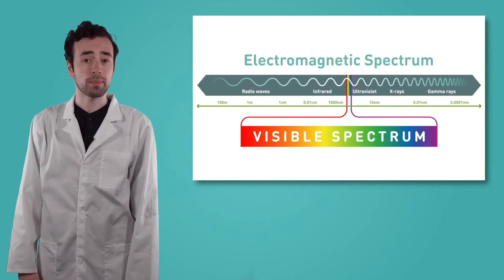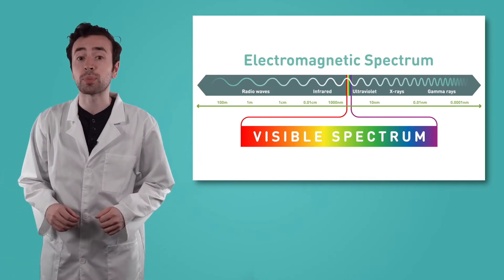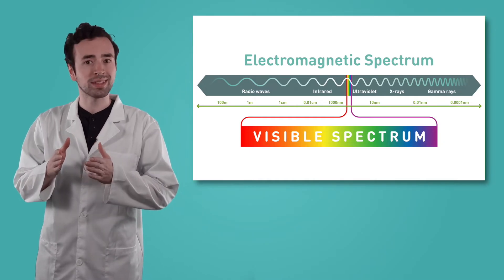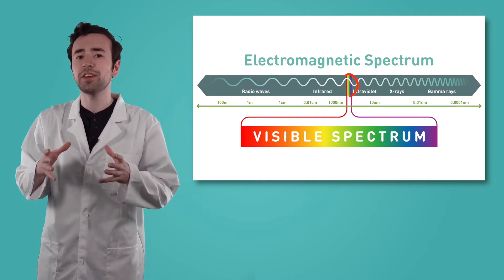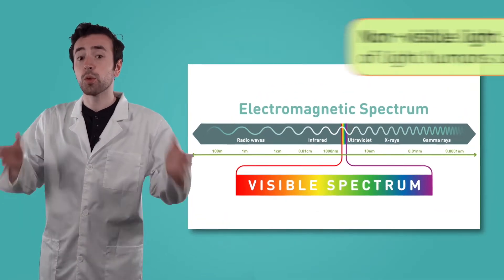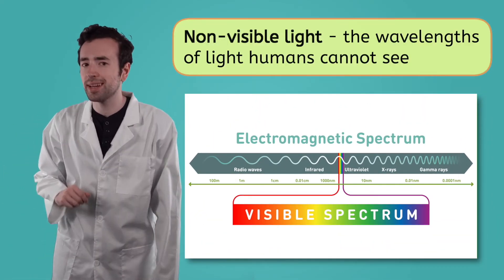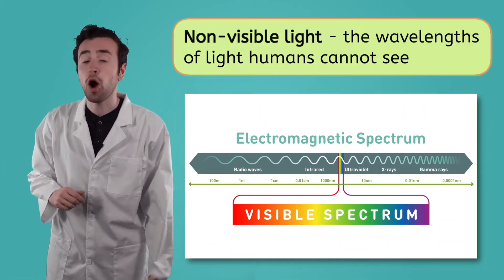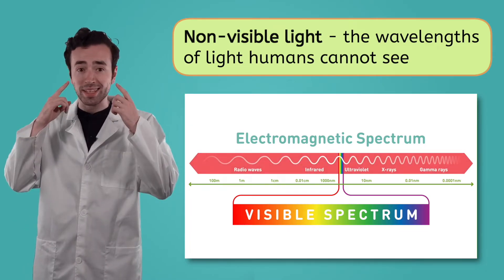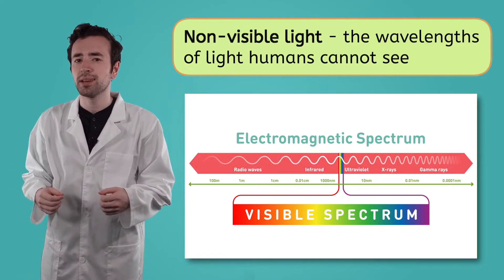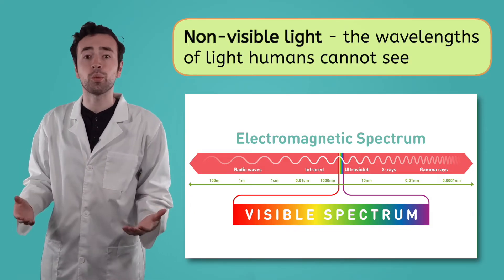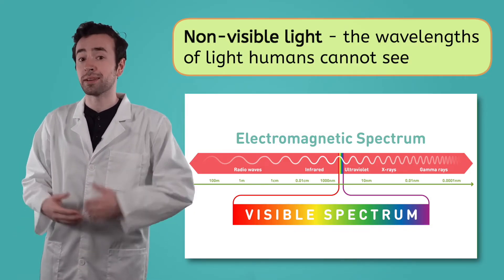Remember, human eyes are capable of perceiving only certain wavelengths of light, which represents a tiny fraction of the entire electromagnetic spectrum. The wavelengths of light that humans cannot see are called non-visible light. Even though our eyes can't see non-visible light, scientists have learned a lot about it, including ways it can be both helpful and harmful.